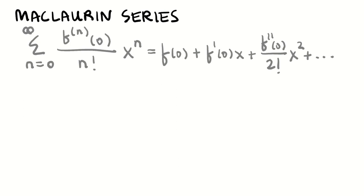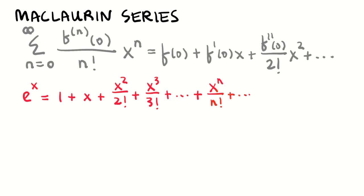There were some Maclaurin series that we just had to know. We developed them for e^x: that was 1 + x + x²/2! + x³/3! + ···, and the general term was x^n/n!.